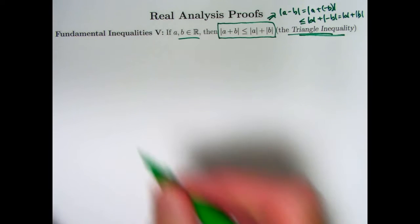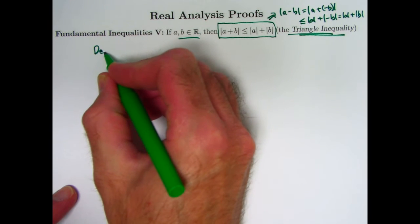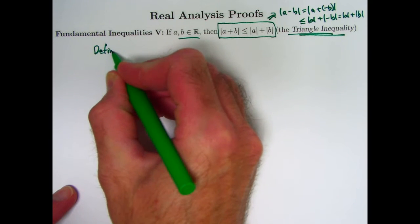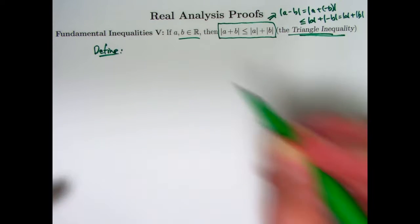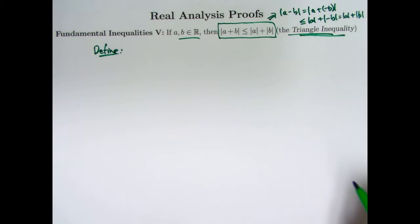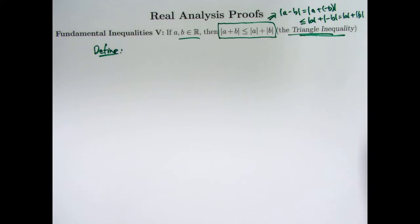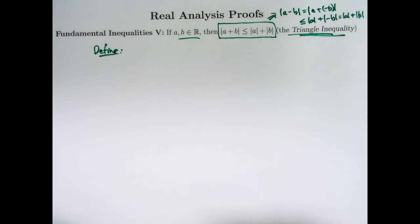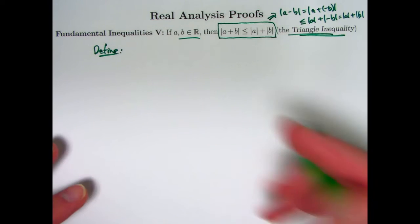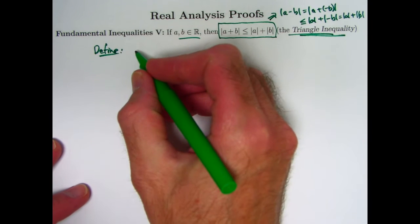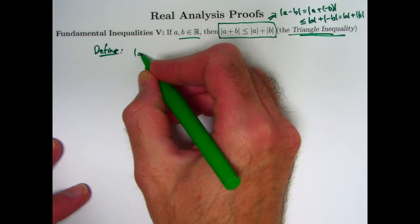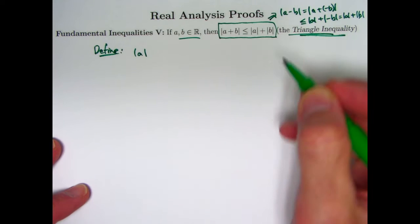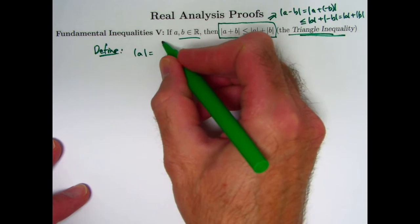Before we can prove this, we need to first really define what we mean by the absolute value of a real number. We also need to mention some lemmas — some simpler facts that are going to make it convenient for us to prove the triangle inequality fairly quickly. First, we want to define for an arbitrary real number a what its absolute value equals.